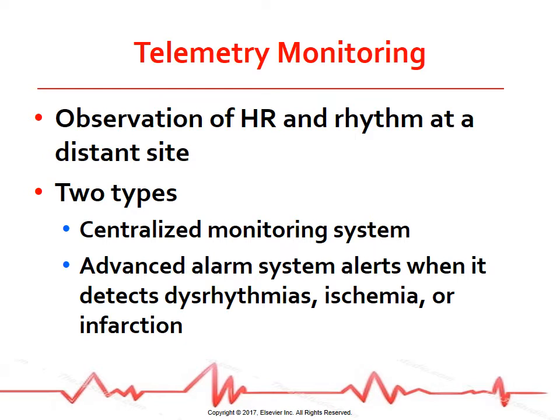Telemetry monitoring is the observation of a patient's heart rate and rhythm at a site distant from the patient. Two types of systems are used. The first is a centralized monitoring system requiring you or a telemetry technician to continuously observe a group of patients' ECGs at a central location. The second system does not require constant surveillance — it has the capability of detecting and storing data, with advanced alarm systems providing different levels of detection of dysrhythmias, ischemia, or infarction. Computerized monitoring systems are not fail-proof; frequently assess all monitored patients for signs of hemodynamic instability.